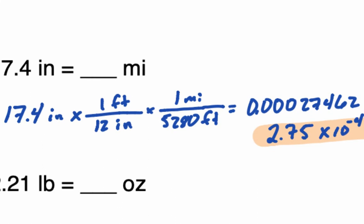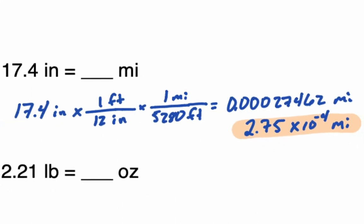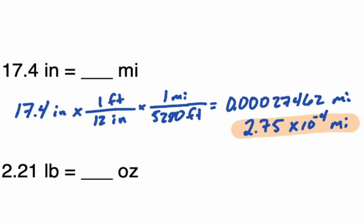Let's look at the others. For 17.4 inches, we calculate 0.00027462 miles. With your calculator in scientific notation mode, this is much simpler: you would see 2.7462 times 10 to the negative four. When writing our answer with three significant digits, you would write 2.75 — because the six gets dropped and rounds the four up to five.